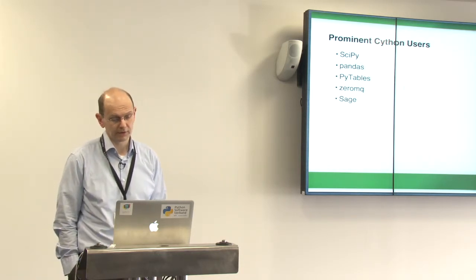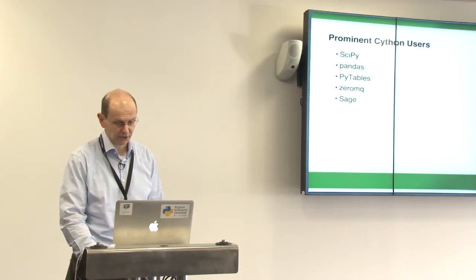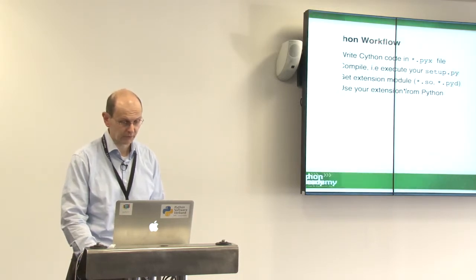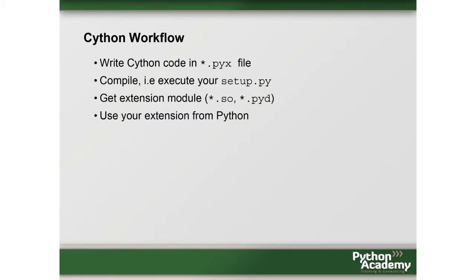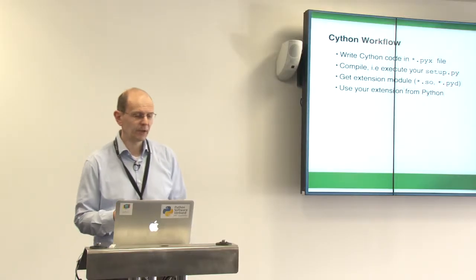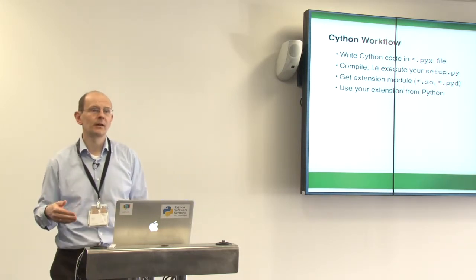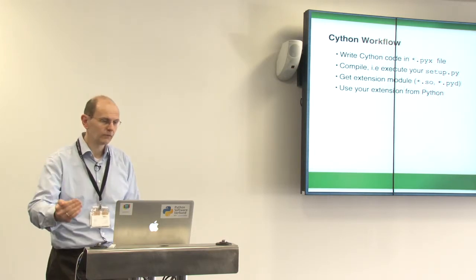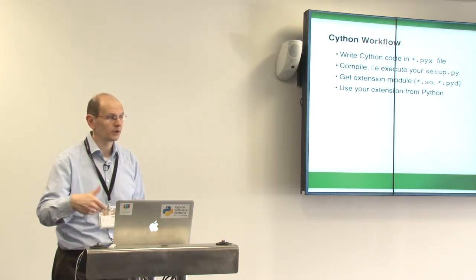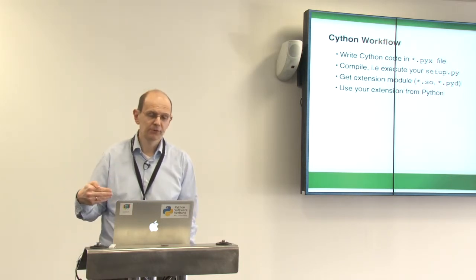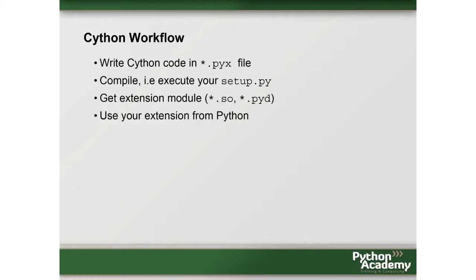Your extension will be as fast as if you write things yourself, but it's much less work and much more convenient to work with. The Cython workflow: you create a PYX file. A PYX file can be just a pure Python file in the beginning. Then you can add type annotations that give the Cython compiler information about what you want. You compile the thing with a setup file, get an extension module, and you can ship it — your user doesn't need Cython, a compiler, or any C code.